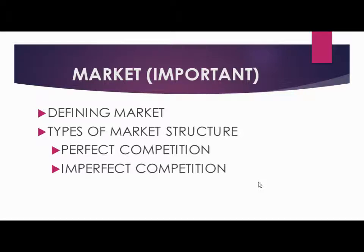Based on the combination of buyers and sellers, we define market structure. We talk about two types of competition: perfect competition and imperfect competition. Sometimes this may come as a complete descriptive question, so just read it once carefully.